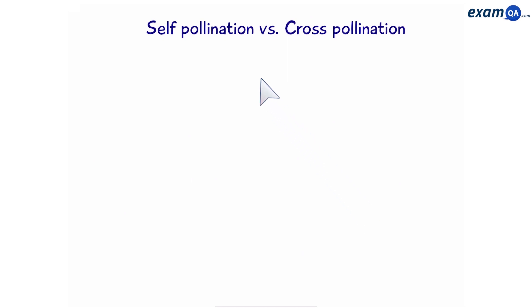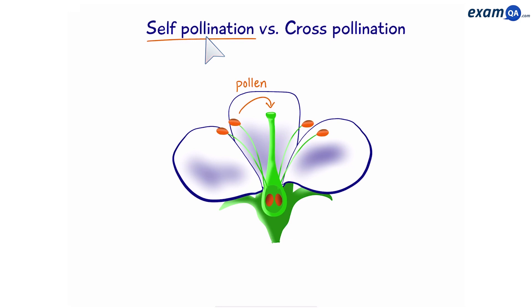Self-pollination versus cross-pollination. Self-pollination is when the pollen from the same flower goes onto its stigma. This means the plant needs to have both male and female parts.